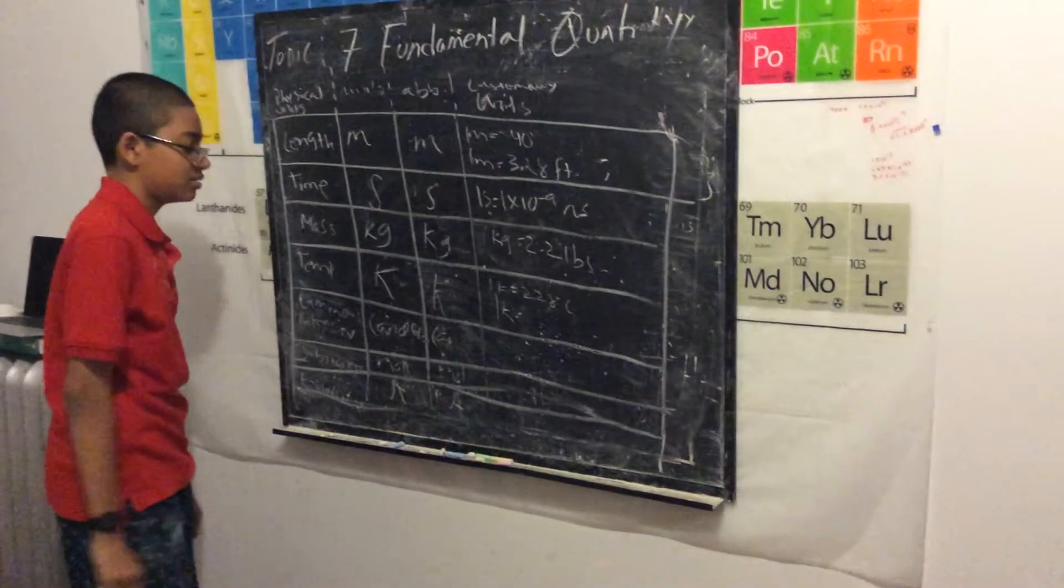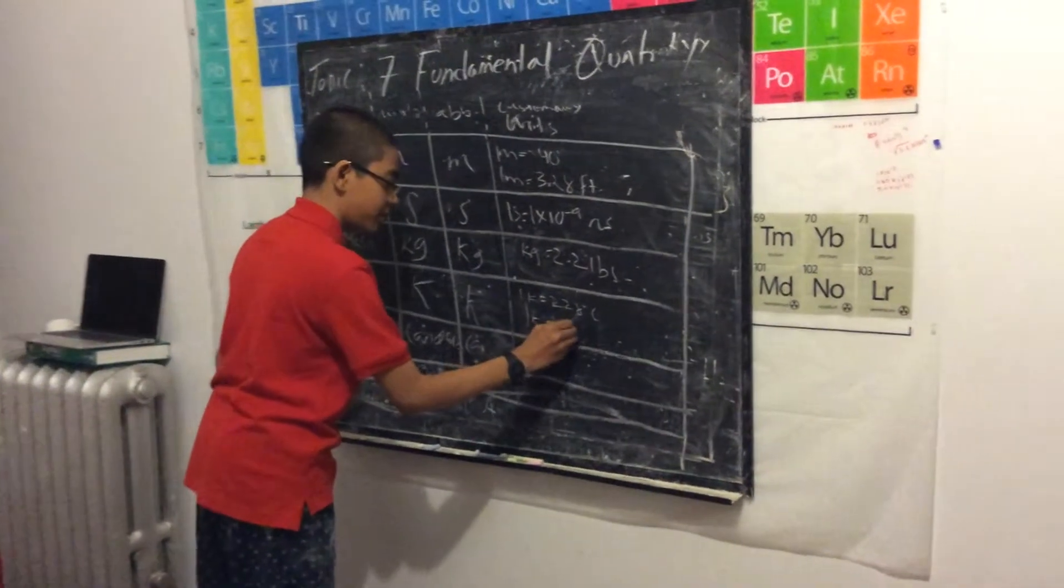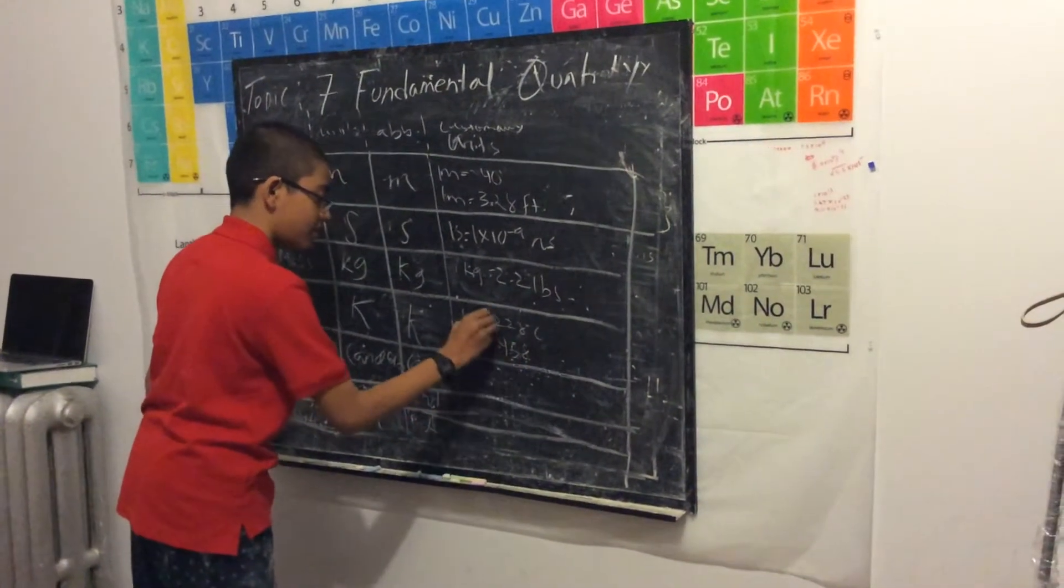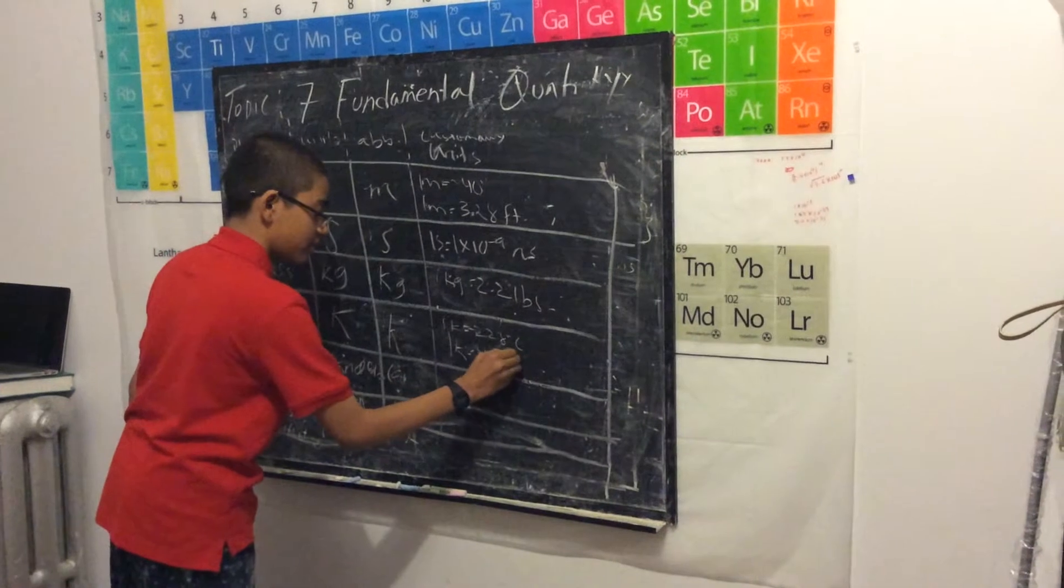As we measure in the US, one Kelvin is negative 458 degrees Fahrenheit.